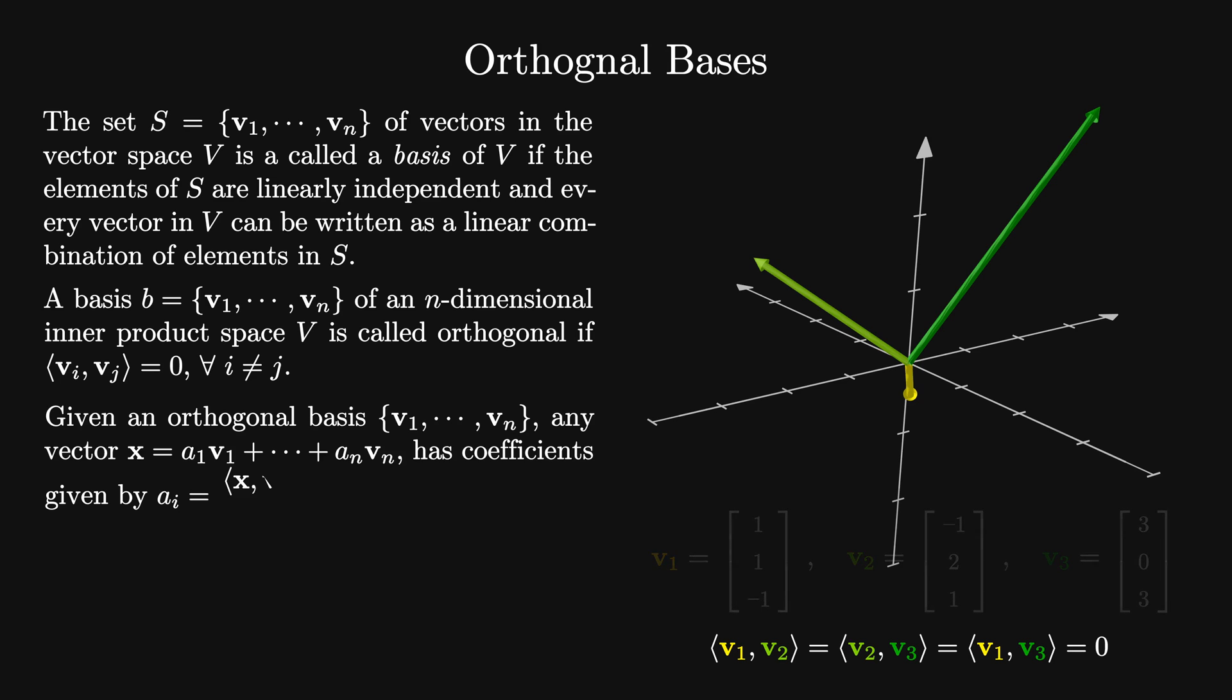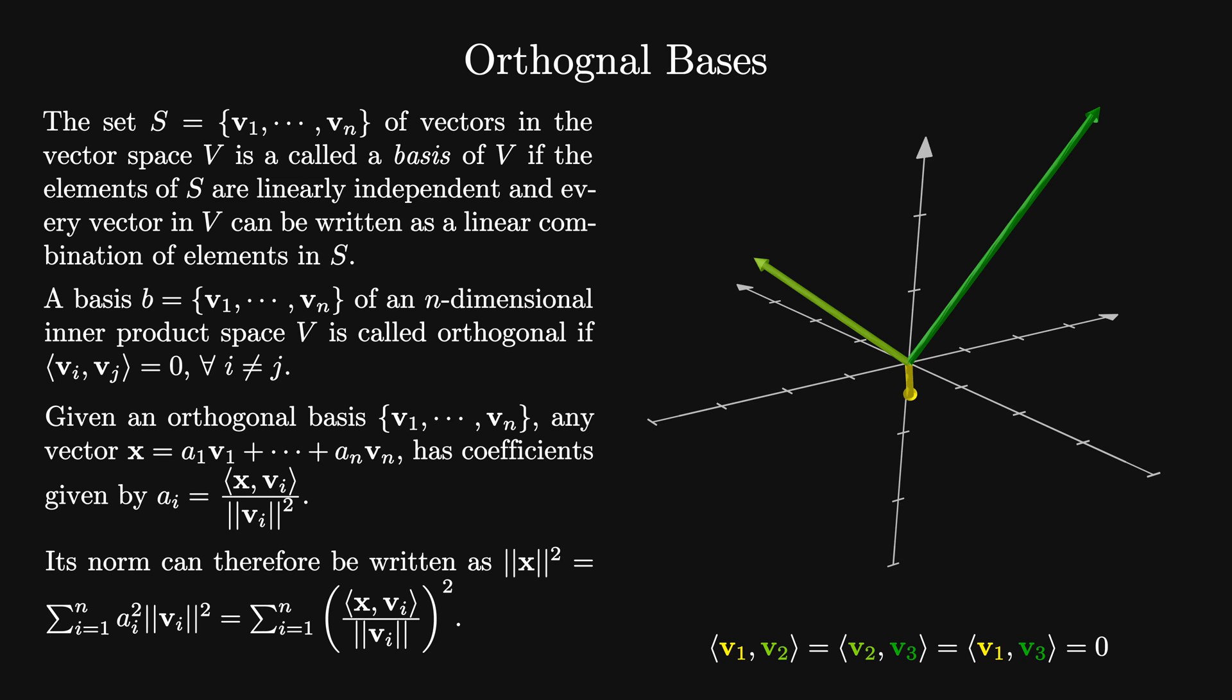Given an orthogonal basis, any vector can be written as a linear combination of its elements, where the coefficient of the i-th vector is given by the inner product of x with vi divided by the magnitude of vi squared. You can think of the inner product as projecting the vector x onto the vector vi.